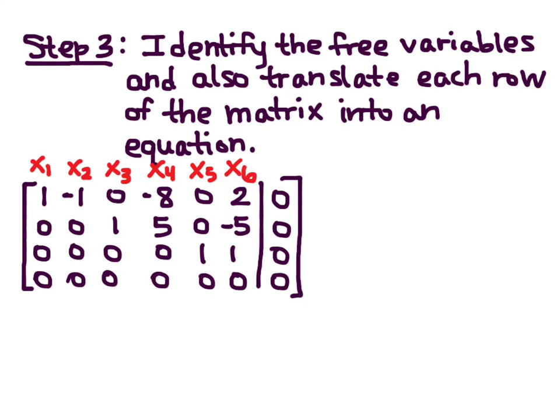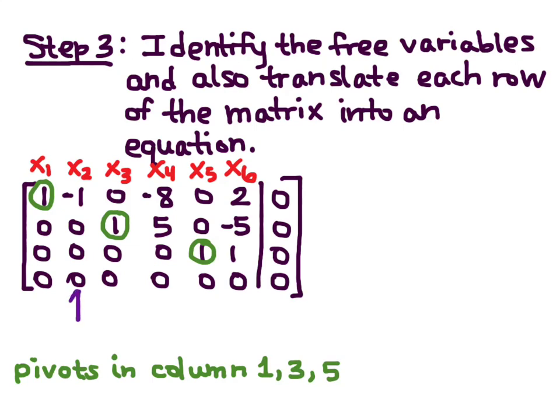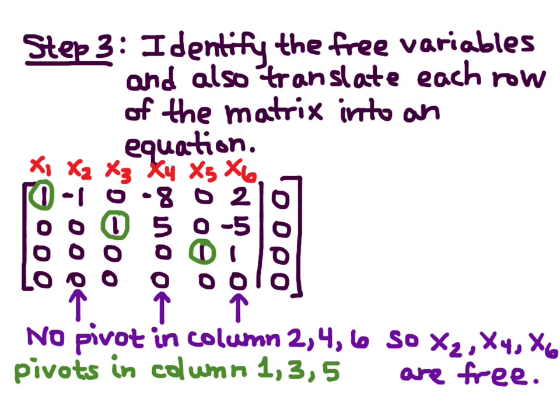Now, I start by identifying my pivots. So, these three are pivots in columns 1, 3, and 5. Now, I want to identify my columns with no pivots: 2, 4, and 6. So, X2, X4, and X6 are free.